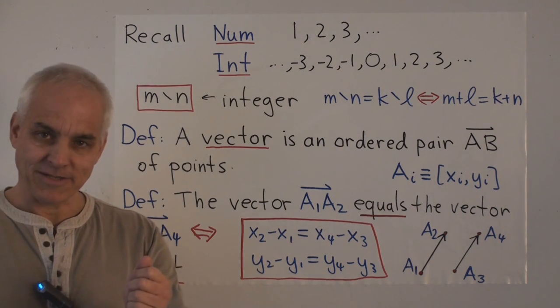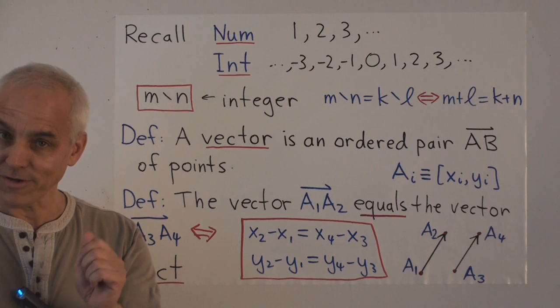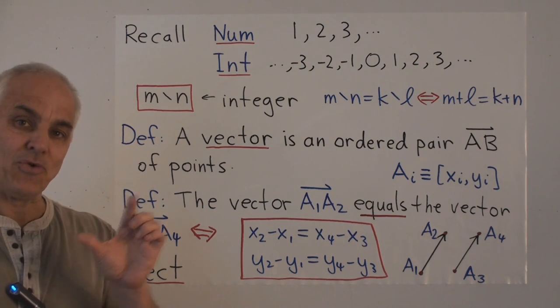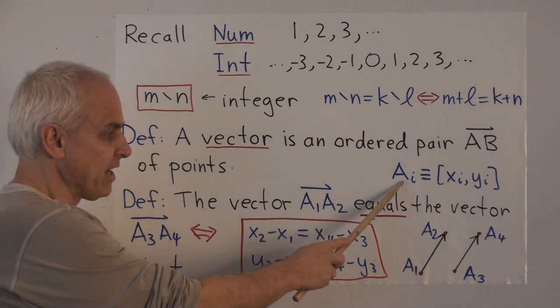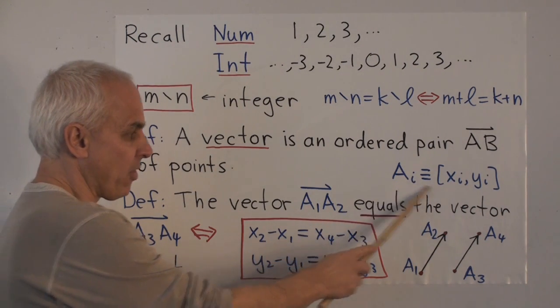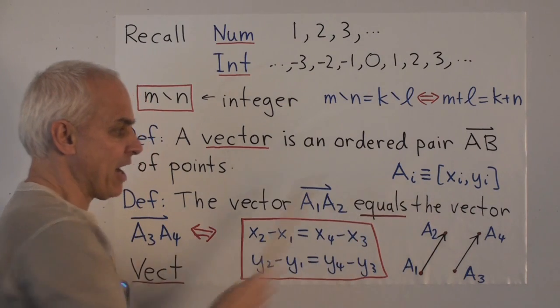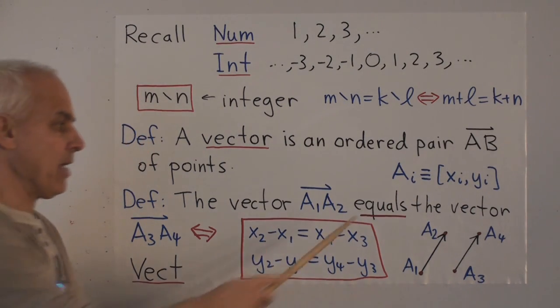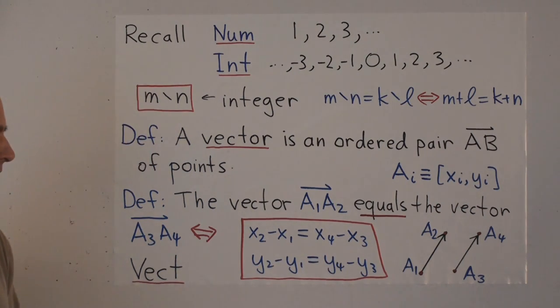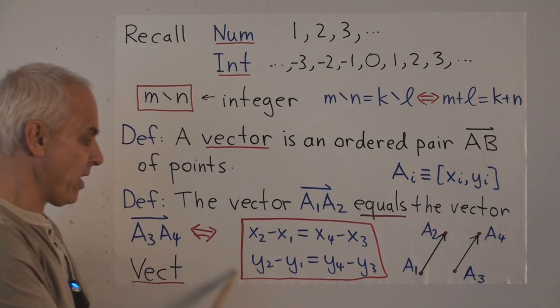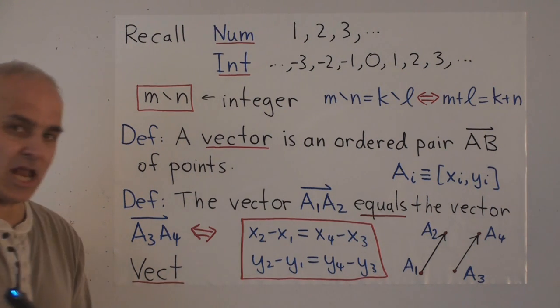Now along with this definition, you won't be surprised to hear that there's a notion of equality. We have to say when two vectors are the same or equal. So let's say that we have points a1, a2, a3, a4 with all this, with the same kind of notation here, that a1 equals x1, y1, a2 equals x2, y2, and so on. Then we'll say that the vector a1, a2 equals the vector a3, a4 precisely when these two relations are satisfied.